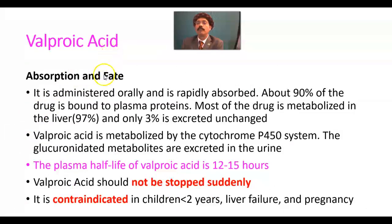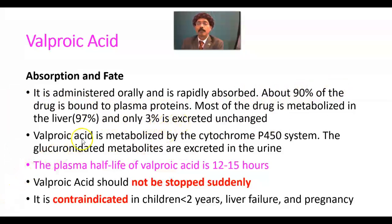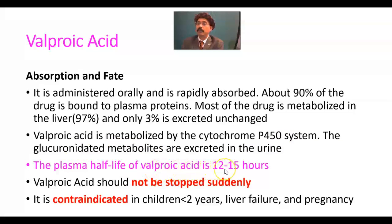What is the absorption and fate of valproic acid? It is administered orally and is rapidly absorbed from the small intestine. About 90% of the drug is bound to plasma protein. Most of the drug is metabolized in the liver, and only 3% is excreted unchanged. It is metabolized by the cytochrome P450 system, and the glucuronated metabolites are excreted in the urine. The plasma half-life of valproic acid is 12 to 15 hours.